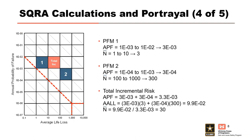Here is an example pulling everything together. Given two failure modes, PFM1 and PFM2, to calculate the total APF we sum the geometric means: 3×10⁻³ plus 3×10⁻⁴ equals 3.3×10⁻³. The total AALL equals APF×N for PFM1 plus APF×N for PFM2: (3×10⁻³ × 3) + (3×10⁻⁴ × 300) = 9.9×10⁻². The average life loss equals AALL divided by APF, giving a value of 30. With APF of 3.3×10⁻³ and M-bar of 30, the total risk is represented by the red box with APF range 1×10⁻³ to 1×10⁻² and life loss from 10 to 100.